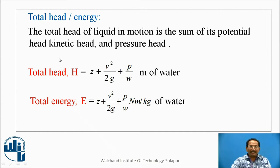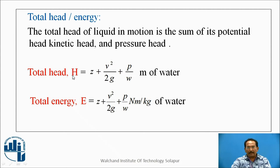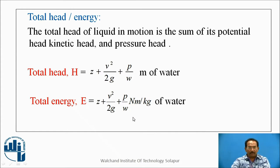The equation states that the total head of liquid in motion is the sum of its potential head, kinetic head, and pressure head. If you are calculating in terms of head: z plus v squared upon 2g plus p by w, measured in meters. If calculating in energy, the total energy E equals z plus v squared upon 2g plus p by w, with units of newton-meter per kg of water.